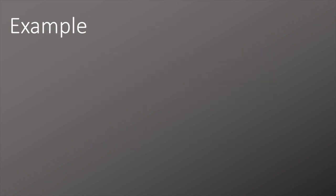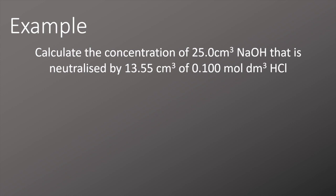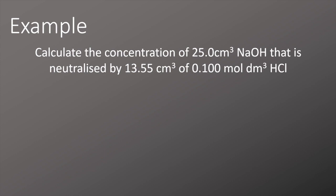So if we use the mean titer results calculated from the previous slide and look at this example, we're asked to calculate the concentration of 25 cm³ of sodium hydroxide that is neutralized by 13.55 cm³ of 0.1 mol per dm³ of hydrochloric acid. The first thing we'll do is write out the equation and look at the reacting ratios between the sodium hydroxide and the hydrochloric acid. We can see here that it's one to one.